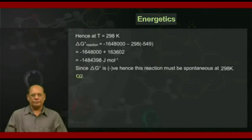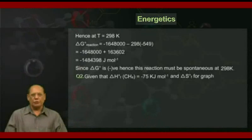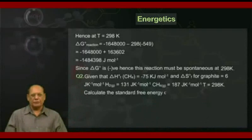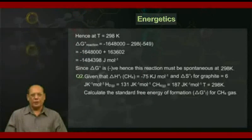Question number two. Given that ΔH°f for CH₄(g) = -75 kJ/mol, and S° values: C(graphite) = 6 J/(K·mol), H₂(g) = 131 J/(K·mol), CH₄(g) = 187 J/(K·mol), at T = 298 K. Calculate the standard free energy of formation, ΔG°f, for methane gas.